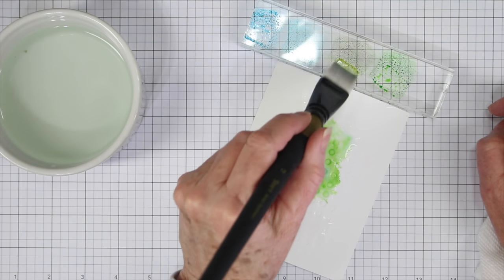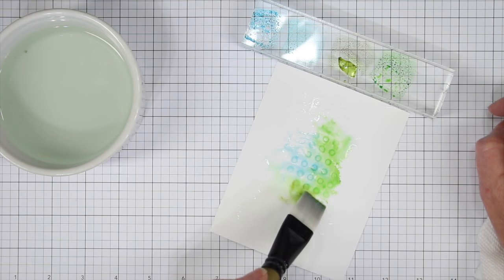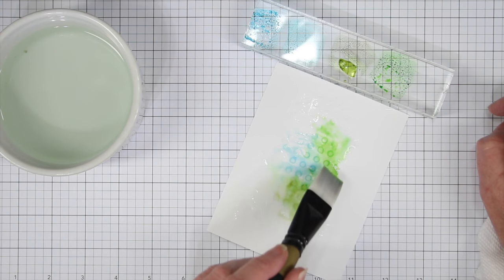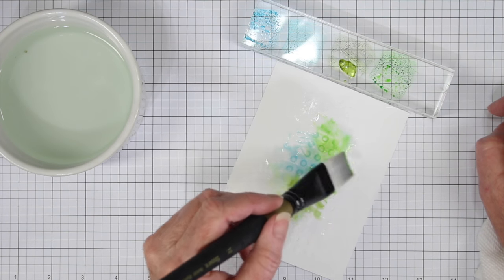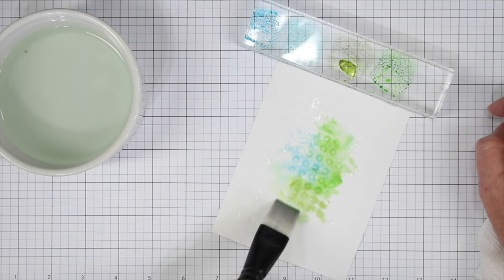In between each of the colors, I am dipping into my water just to get that brush wet so the ink is wet on my acrylic block. I've just dipped into peeled paint, and now I'm adding a little bit of that.